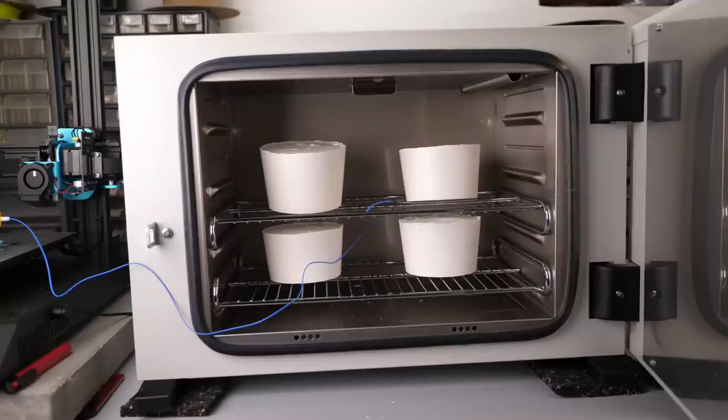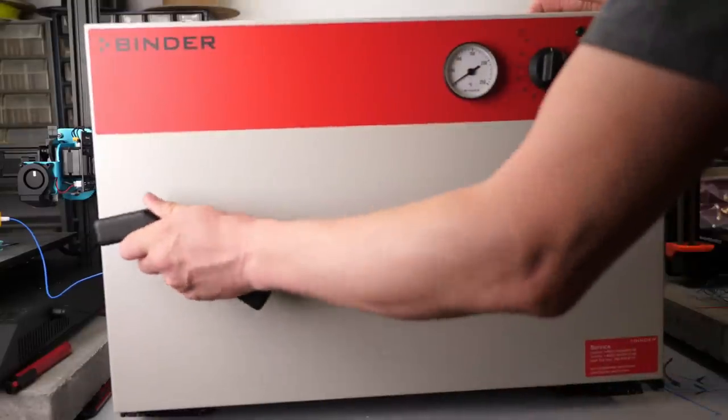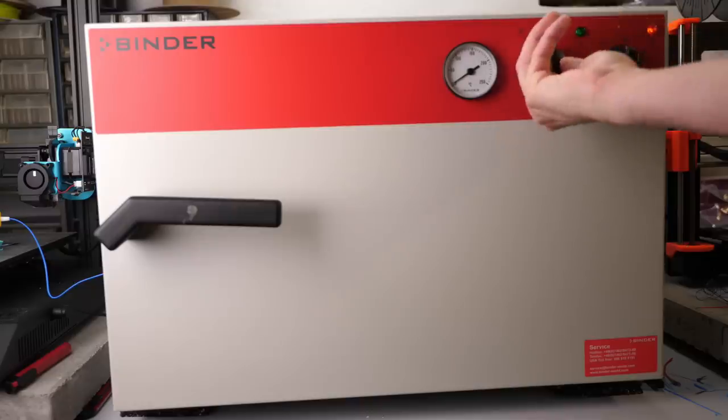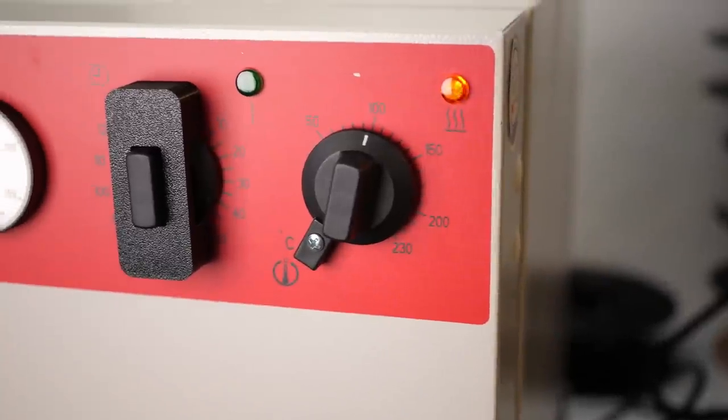Next I finally put the cylinders into my lab oven, raised the temperature first to 100°C, and then continued all the way to 200°C. While our parts are annealing in the oven, let's quickly talk about today's video sponsor.